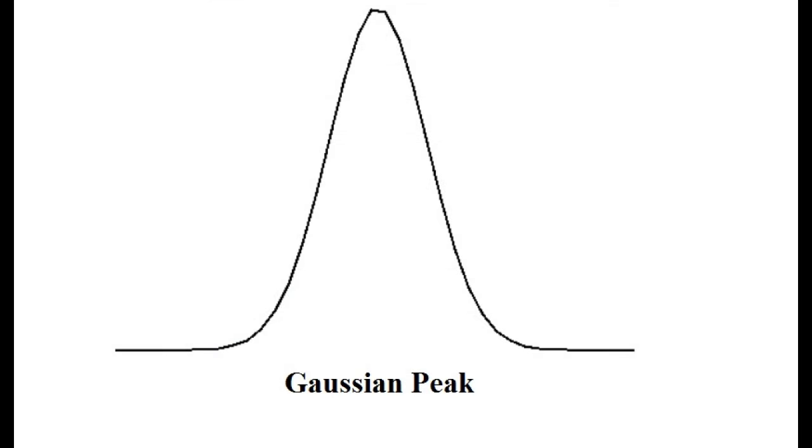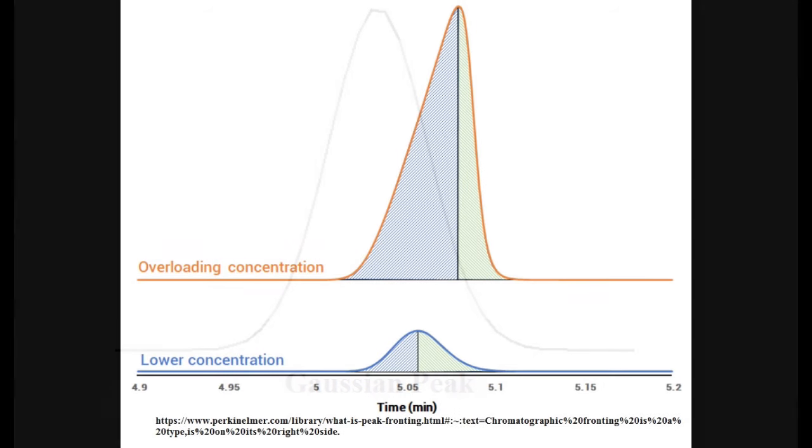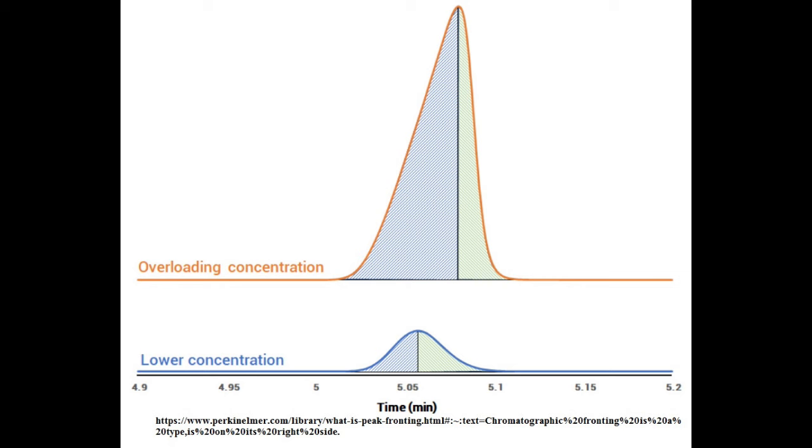Now, if the peaks are not Gaussian, then the peak shape can be used to tell us what kind of problems we are having with our analysis. Fronting can be caused by overload. The concentration of the analyte is too high. This is the most common cause of fronting. Coalition of two different compounds can also cause fronting or column degradation just because it's been used over time, you know, just regular use. It's degraded to the point that it needs to be replaced. This is what I call column death. That is not a technical term, but it very succinctly sums up what the deal is.